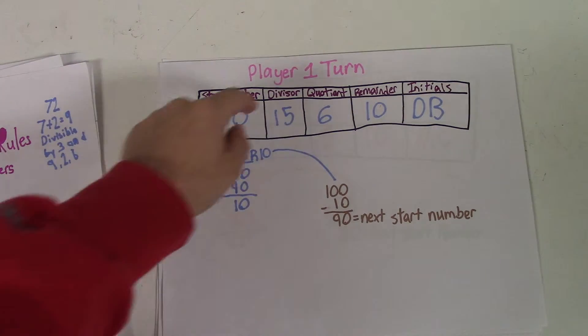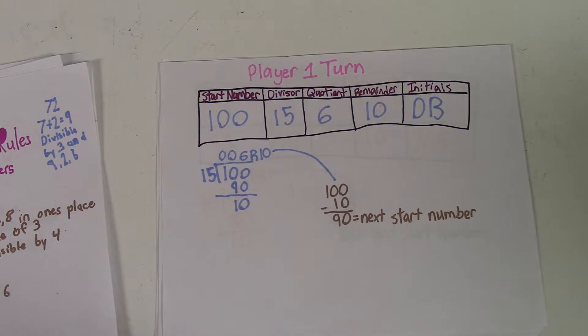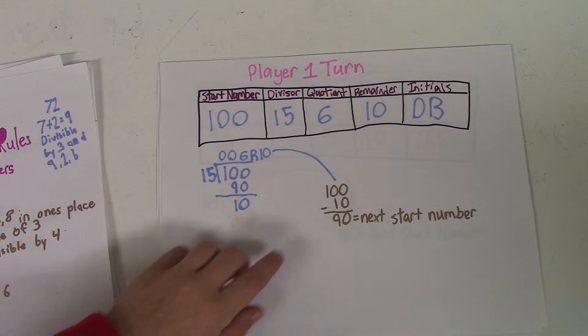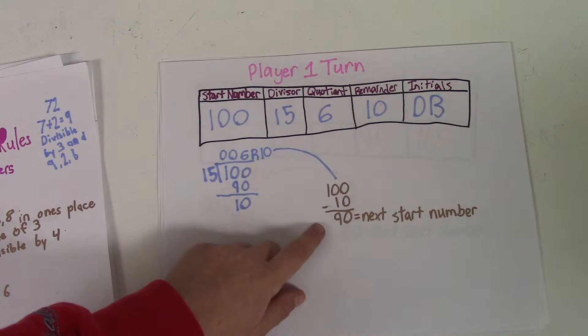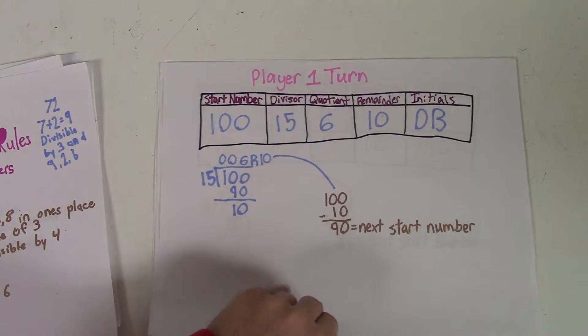If I do 100 divided by 15, I'm going to get the answer of 6 with a remainder of 10. So then I'd fill out the chart up here like I said so, and you'd get a remainder of 10. Then you would subtract the start number by the remainder, and then you'd get 90, which would equal the next start number for the next player.